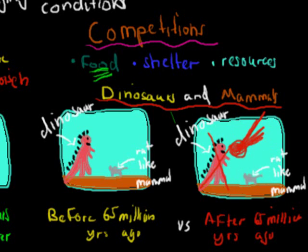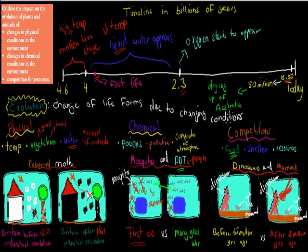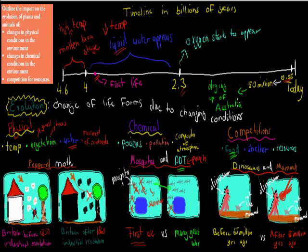So to summarize: evolution was a change of life forms due to changing conditions. For example, how water appeared about 3.8 to 3.9 billion years ago, and how oxygen started to appear 2.3 billion years ago — all these changes in the environment changed the species that came afterwards. And we had physical, chemical, and competition as the three categories.